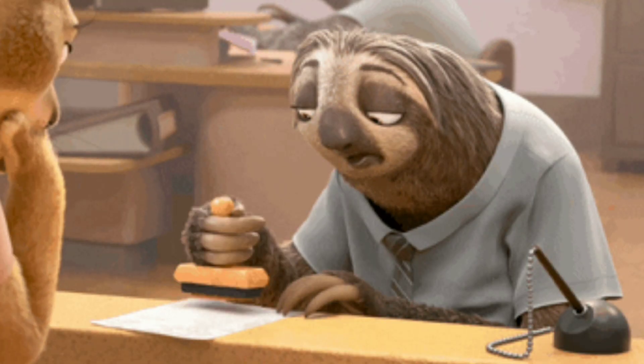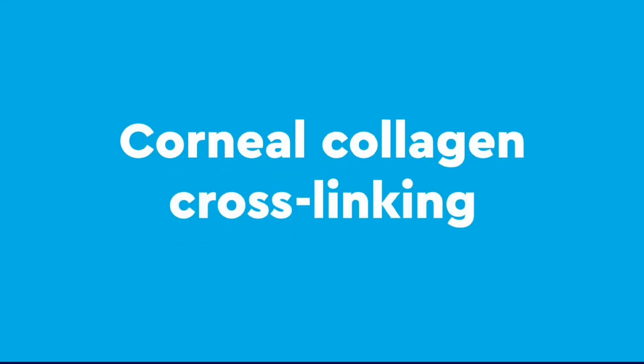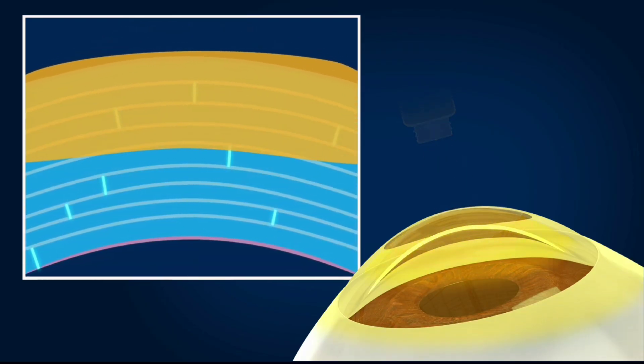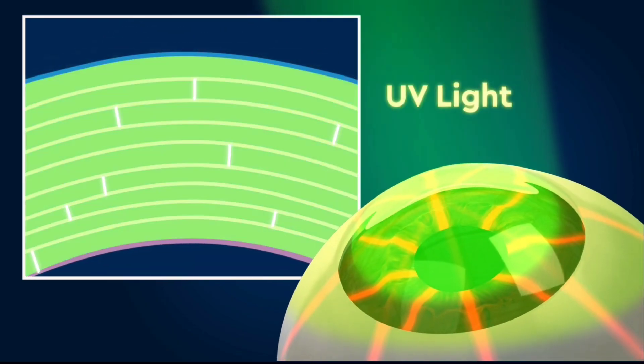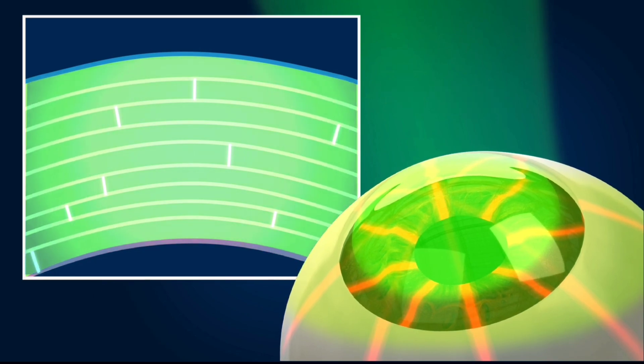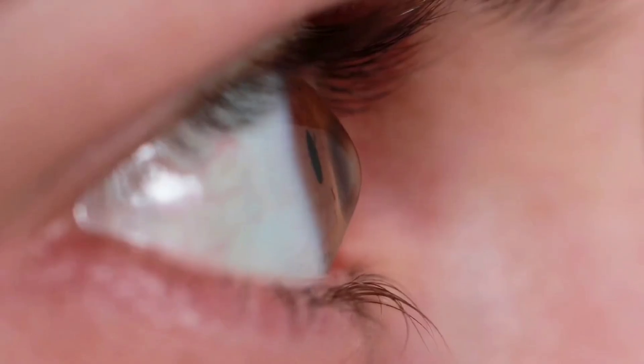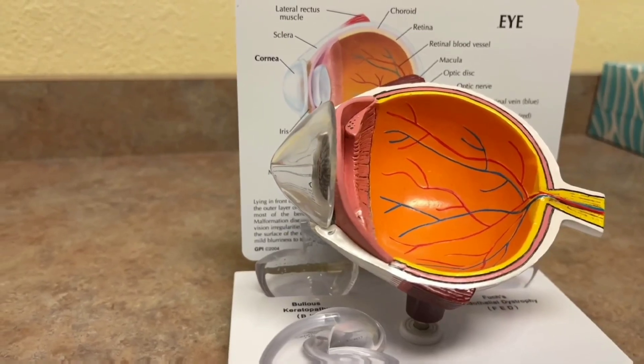To slow down Keratoconus' progression, a treatment called corneal collagen crosslinking is done, where special eye drops and UV light exposure make your cornea more rigid and less flexible. This prevents it from bulging out as much, and is especially useful in the early stages of the disease.